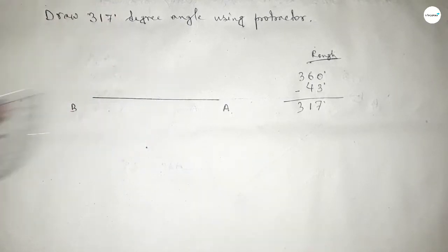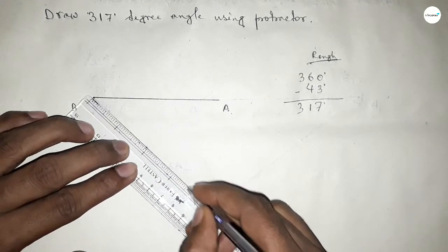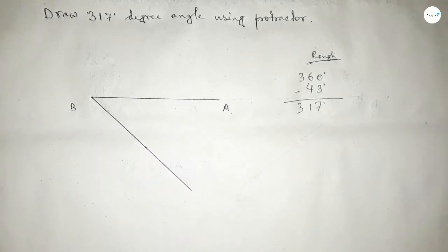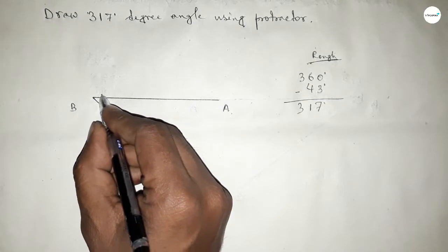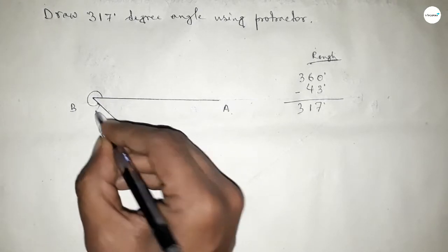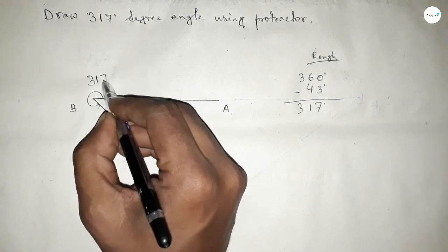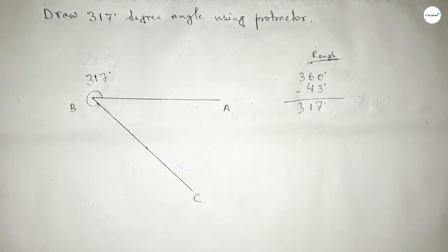Now join this side and mark point C. So angle ABC up to this is 317 degrees.